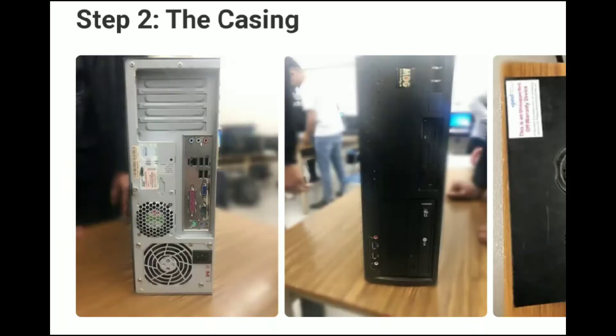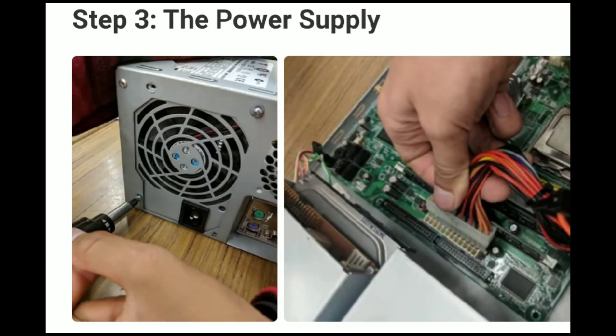Step 2: The casing. After your computer is unplugged, move it to a clear working space. Step 3: The power supply. The power supply manages all the power of the computer. Step 4: CD or DVD drive. This is one of the easiest components to remove.